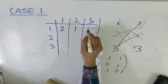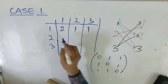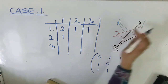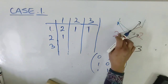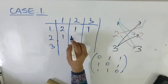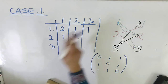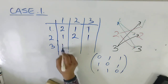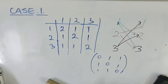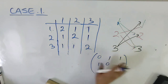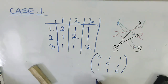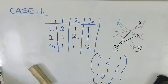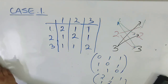One goes to three and comes back to one — that's one path. Two goes to one and comes back to two — one method. Two goes to three and comes back — one method. Three goes to one — one method. Three goes to two — one method. So this gives us the same matrix structure again: values are two, one, one / one, two, one / one, one, two when we look at the path count.